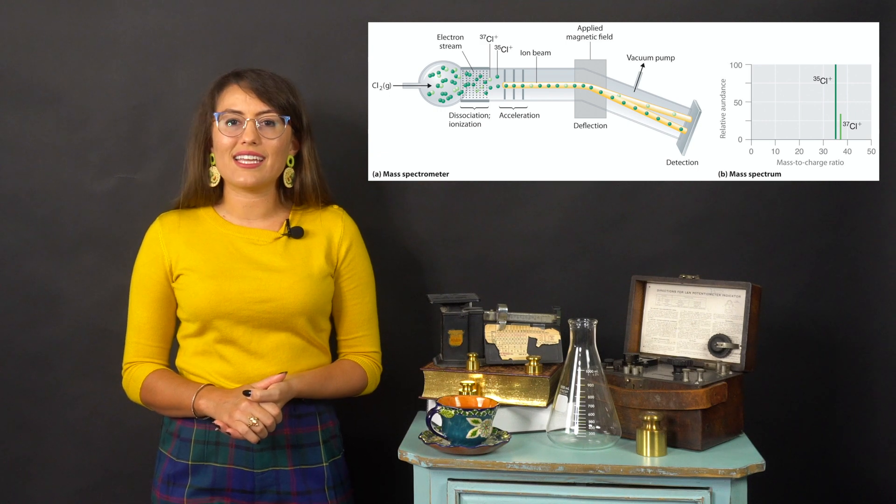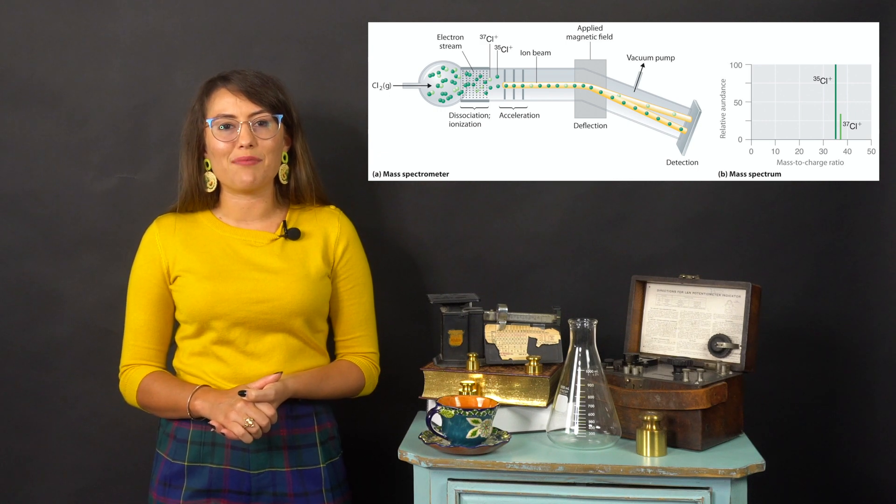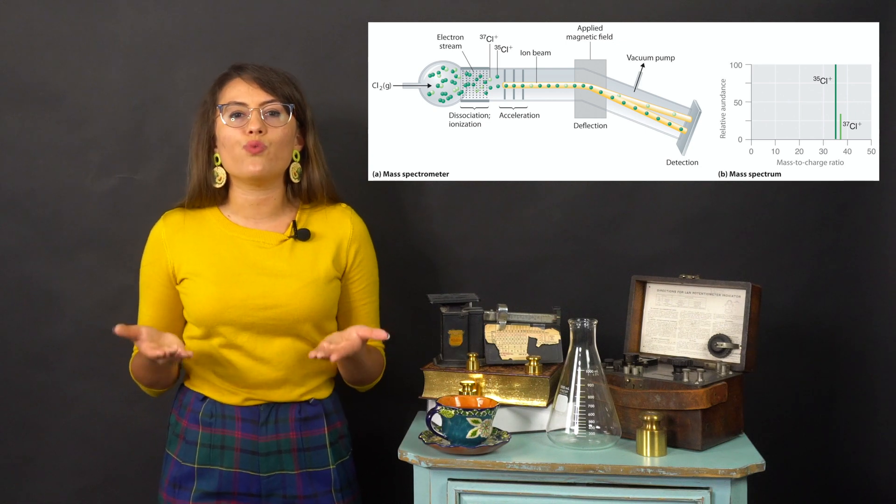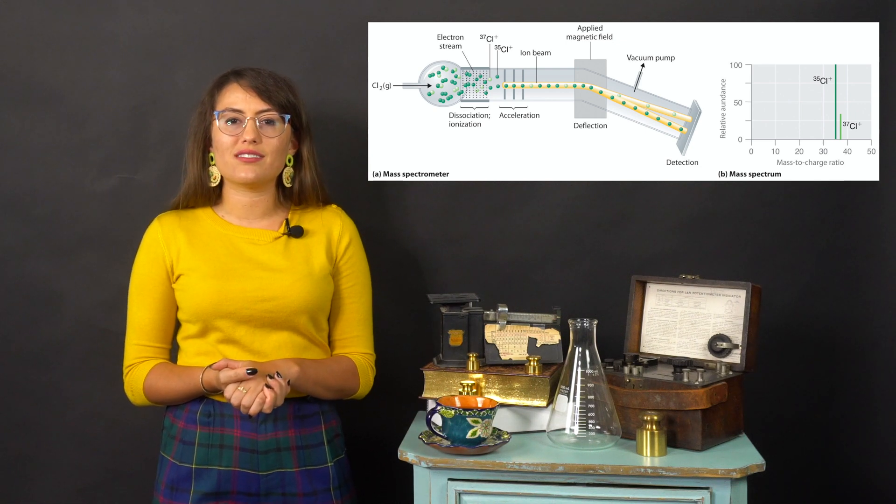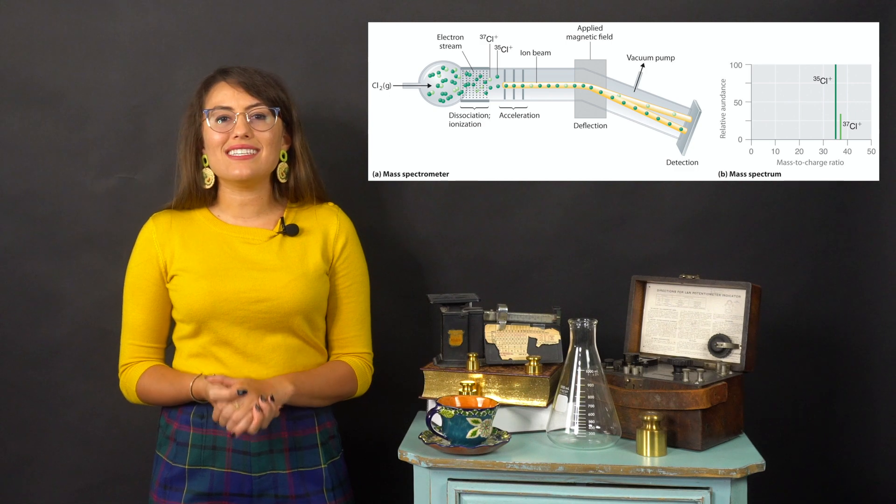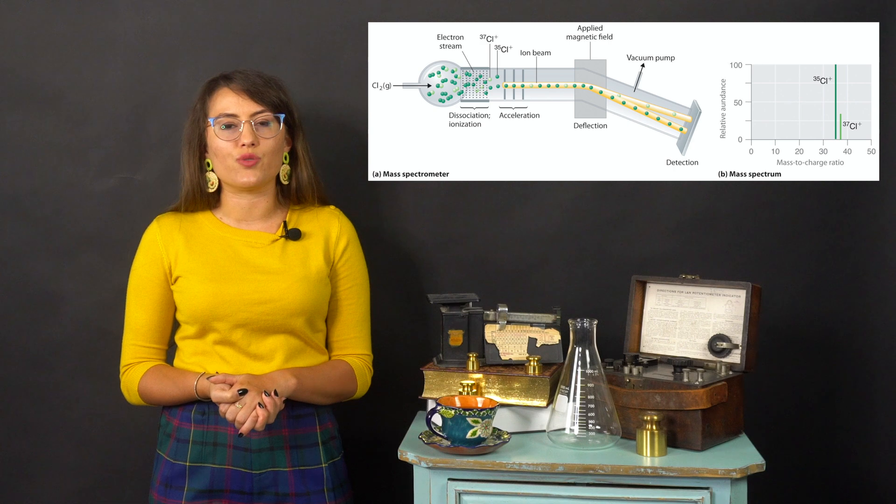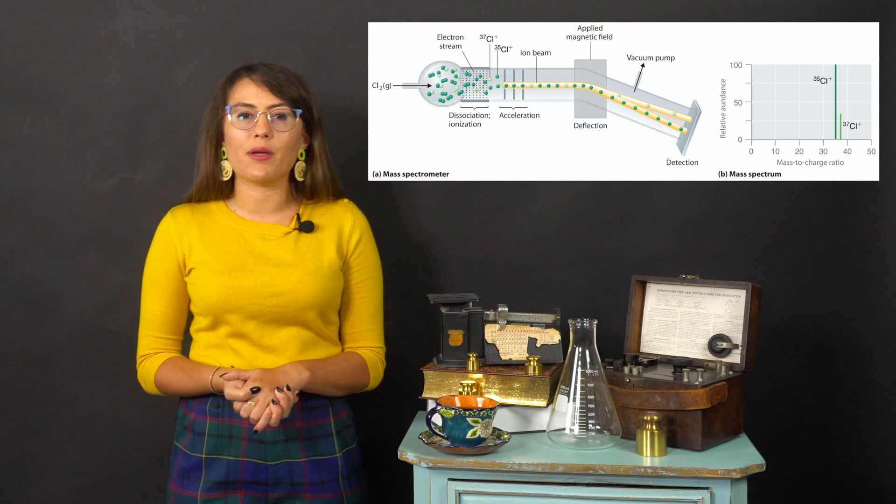These ions are then accelerated. Keep in mind that isotopes of the same element have different masses. This ratio of mass to charge plays a role in how we can determine the atomic weight of an atom. As these ions accelerate, they are passed through a magnetic field and are deflected based on that mass to charge ratio and we can determine their atomic weights.